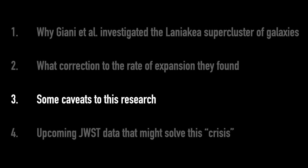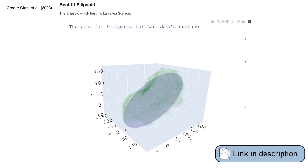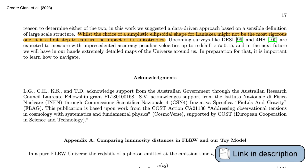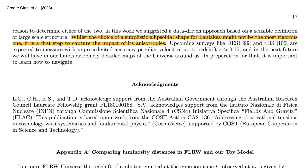Of course, like any research project, there are caveats. First, that ellipsoid shape — that kiwi-like shape — that Gianni and collaborators use to model the Laniakea supercluster is a vast oversimplification of the incredibly complex structure it actually is. Gianni and collaborators do address this in the paper, stating that it's at least a first pass on this incredibly complex problem. With this oversimplification it at least allows them to put some numbers on this to get an idea of what the effect could be.